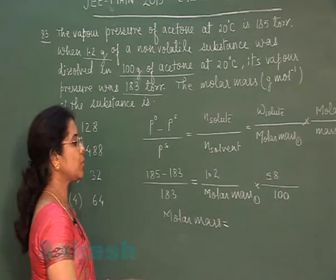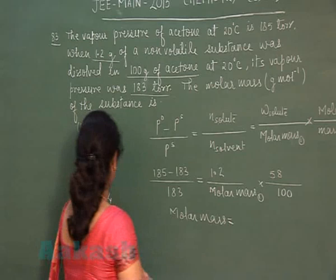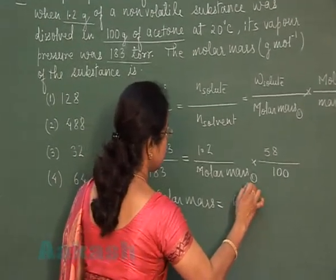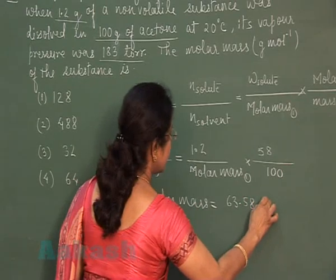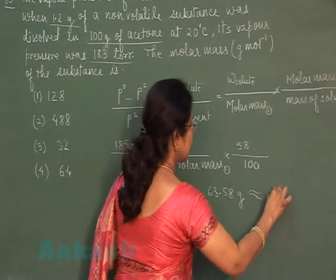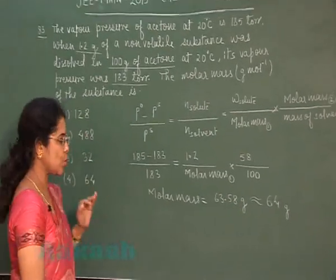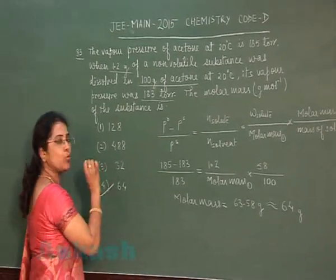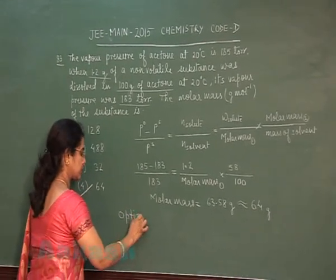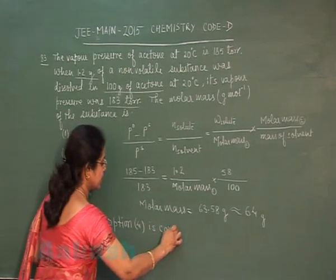Solvent is acetone, so its molecular mass is 58. Applying the formula and solving for molar mass of the solute gives approximately 63.58 grams, which is approximately equal to 64 grams per mol. So the correct answer is the 4th option.